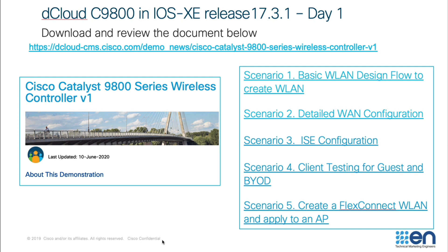We talked about the demo guide that you can download from dCloud once a session is started. If you'd like to download the document prior to scheduling a session, there's a link at the top of this slide where you can download the demo guide ahead of time. It will specifically explain how to set up the IP addresses, how to set up the primary controller, and so on. Once you set up the access point at your remote site, you can connect wireless clients to that device, and we're going to need those wireless clients to proceed with our sessions.